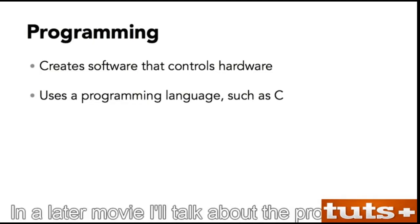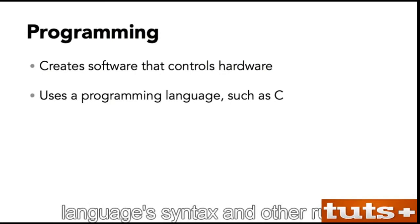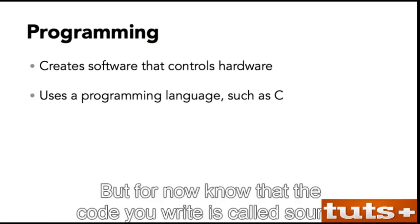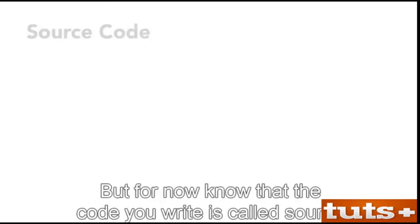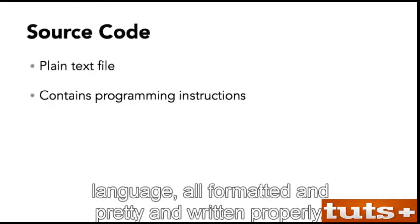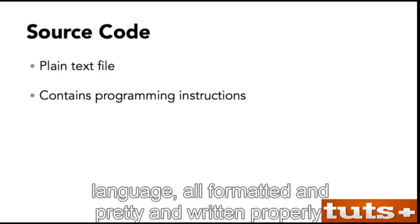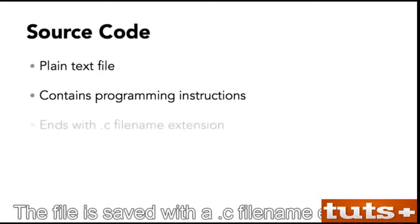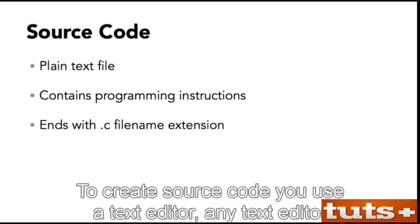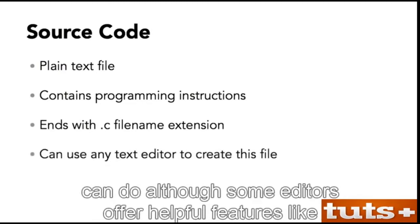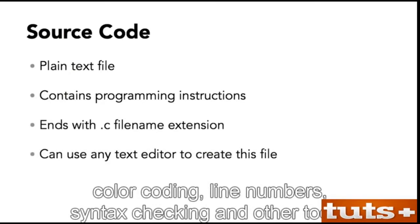In a later movie, I'll talk about the programming language's syntax and other rules. But for now, know that the code you write is called source code. It's a plain text file that contains the programming language, all formatted and pretty and written properly. The file is saved with a .c file name extension. To create source code, you use a text editor. Any text editor can do, although some editors offer helpful features like color coding, line numbers, syntax checking, and other tools.